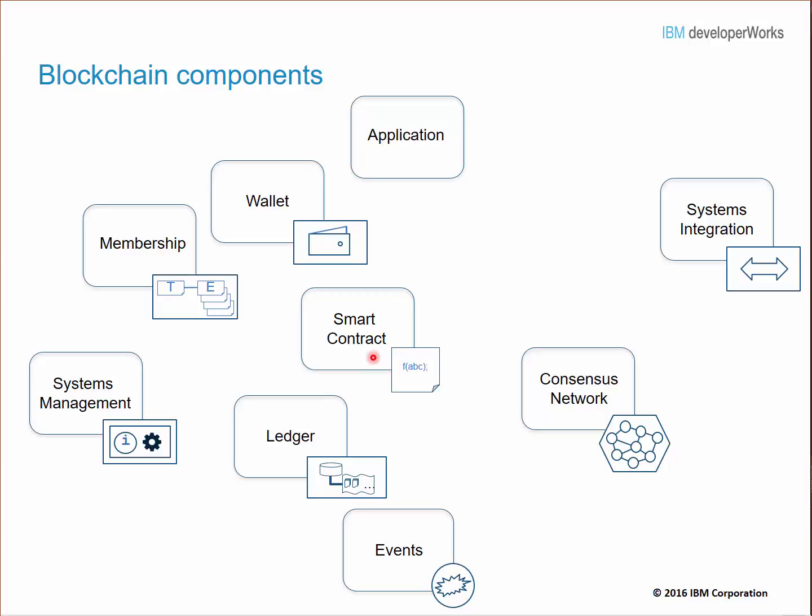For example, consider a smart contract that governs the transfer of assets between two parties. The state of the asset could be stored in world state in one or more variables, and then the smart contract code could consult those variables prior to recording the asset transfer in the ledger, to make sure that the transferring party actually has permission to make the transfer, and the receiving party actually has permission to receive it. So it allows you to put application-level code in the ledger rather than just recording transactions and having all the application logic in the applications running outside the blockchain.